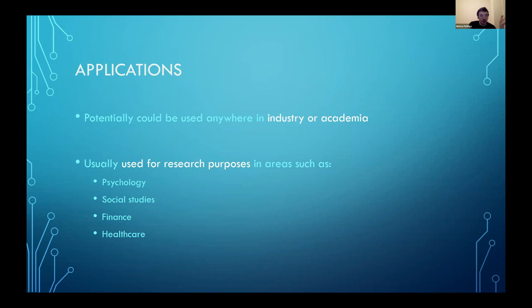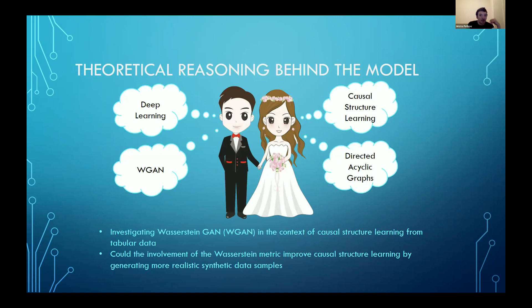These are mostly used for research purposes, and as far as I'm aware, several models have been tried in industry but with limited success. The theoretical reasoning behind my model: I wanted to create a long-lasting relationship between deep learning and causal structure learning, facilitated via WGAN and directed acyclic graphs. The idea was to investigate whether the Wasserstein Generative Adversarial Neural Network could be used in the context of causal structure learning.